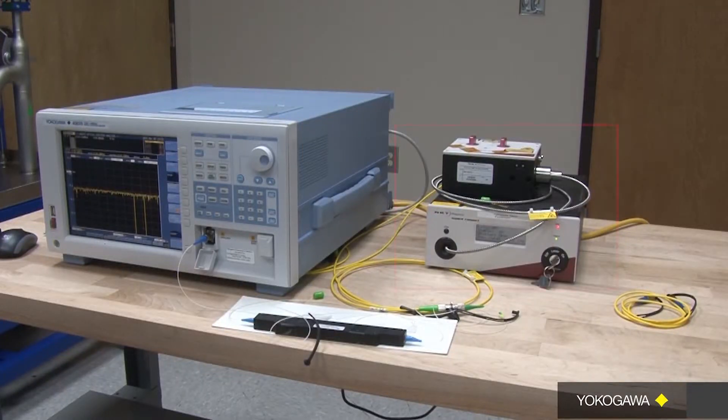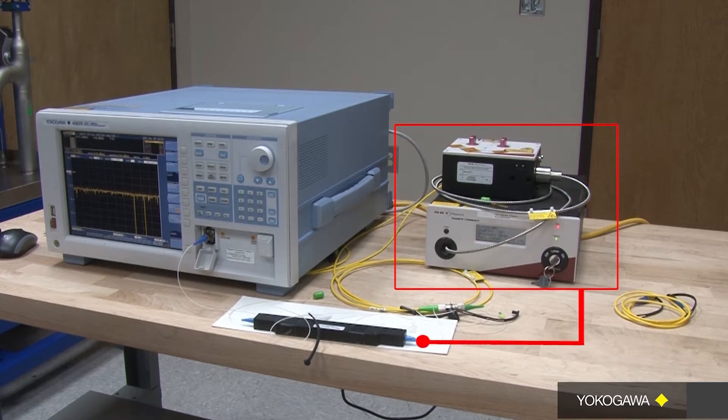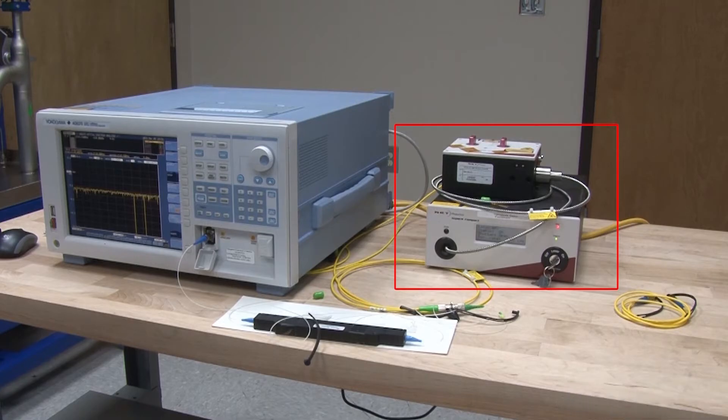What I am going to do is take a super continuum light source and send it through a gas tube containing CO2 gas. This I will put into the front of the AQ 6375 OSA. I am using a super continuum light source because it is a very bright broadband light source.